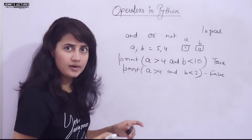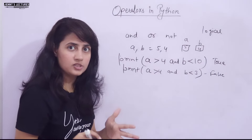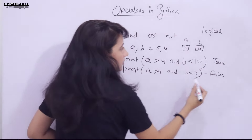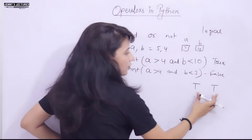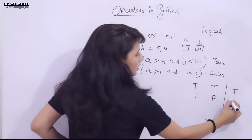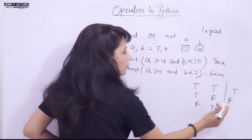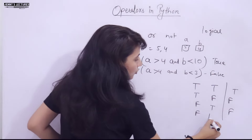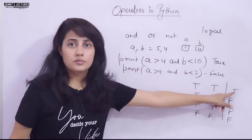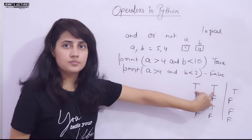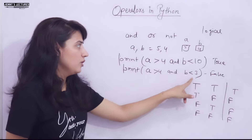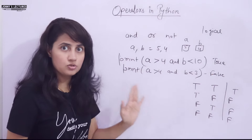Let me tell you the truth table of AND. If both conditions are True, it gives True. If one is True and one is False, it gives False. If one is False and one is True, it gives False. If both are False, it also gives False. So the AND operator gives True only if both conditions are True.